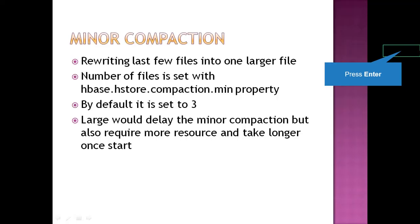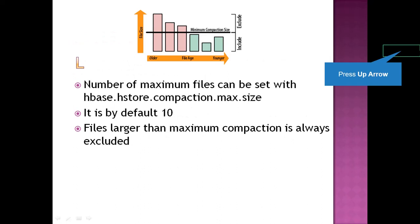There are two types of compaction. One is minor compaction — in minor compaction, the last few files are written into larger files. There is a property called HBase.HStore.compaction.min where we put a value that defines how many files will be compacted into big files. By default its value is 3, and we can set the value as needed.